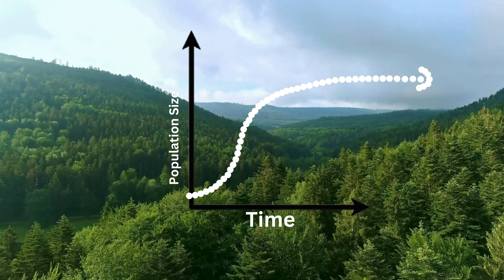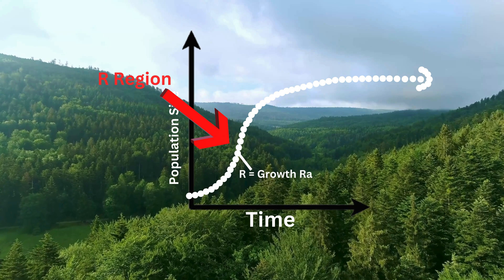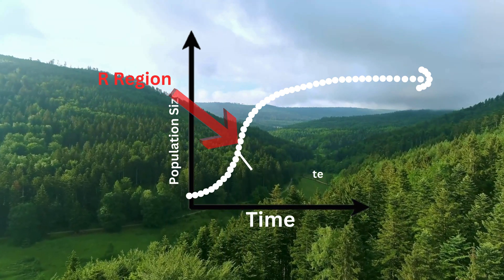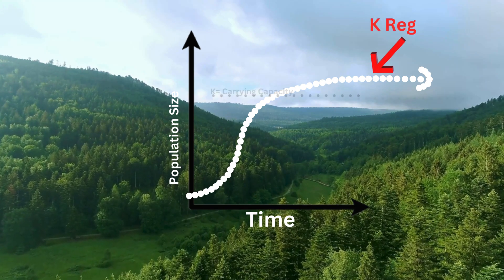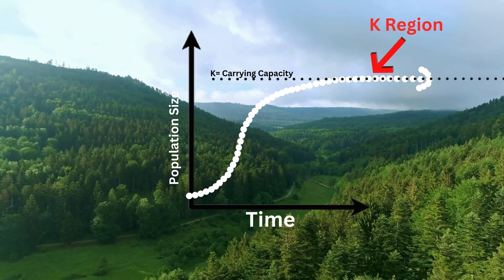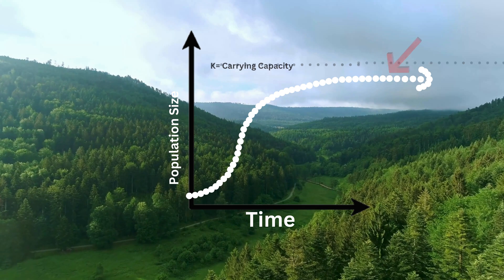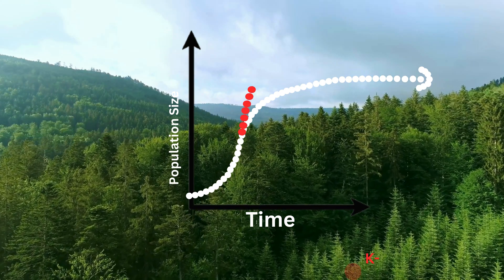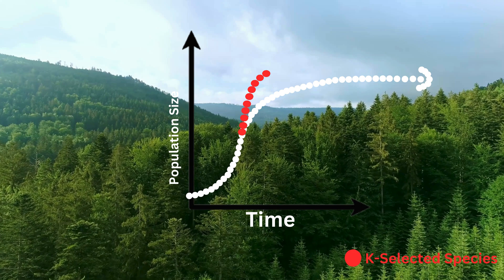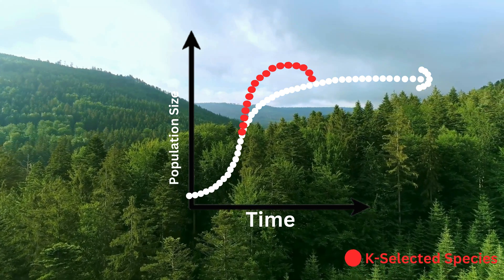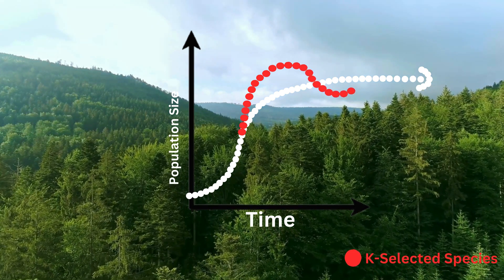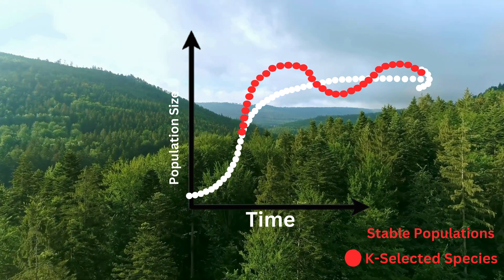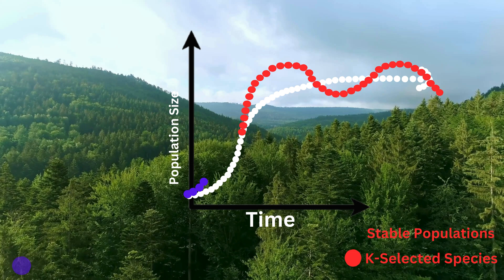we designate R-regions as the population growth seasons of a species, where populations are undergoing proliferation. Then there's K-regions, or carrying capacity seasons of a species, when the population has reached its maximum occupation. The term K-selected comes from the idea that these species, as time proceeds, living in stable environments, will have population alignments that stay close to their carrying capacity, or K-region of the graph.